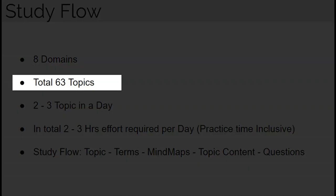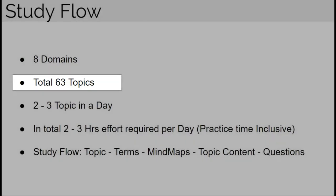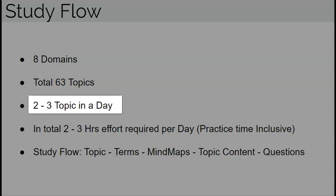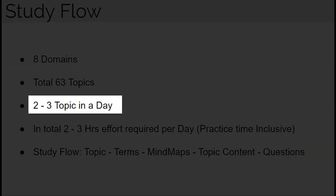In total there are 63 topics across the eight domains of CISSP. In the CISSP exam we can have between 100 to 120 questions, so we can say that the exam will have roughly two questions from each topic — which means covering each topic is very important.